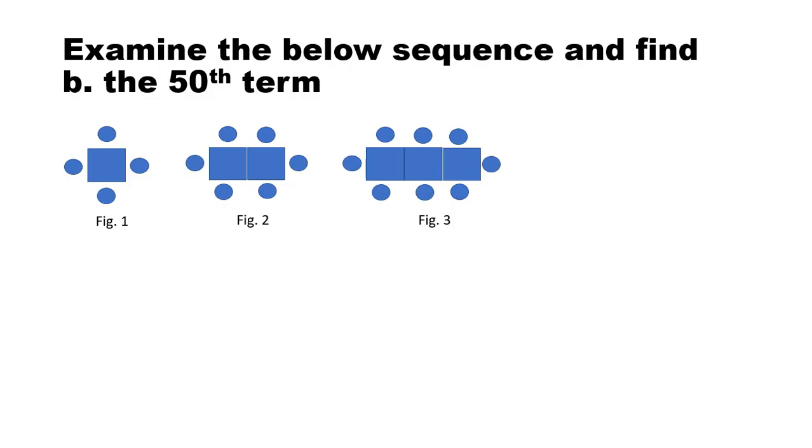It says find the 50th term. The formula that we used is n plus 1 times 2. So in this case, if it is 50th term, this is 50 plus 1 times 2. So 51 times 2. So the answer is 102. So there will be 102 circles in the 50th term.